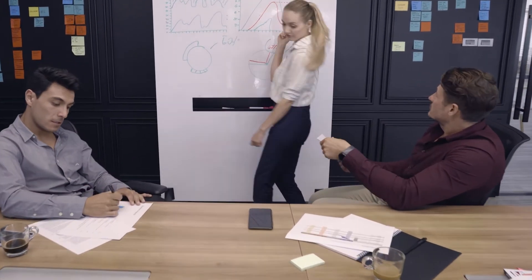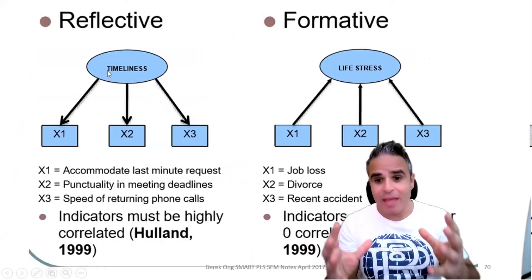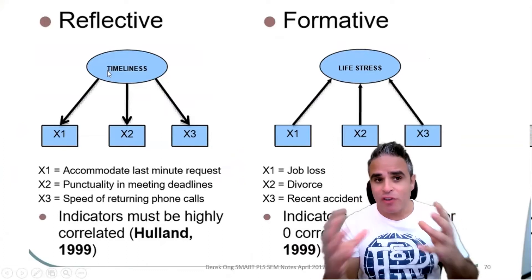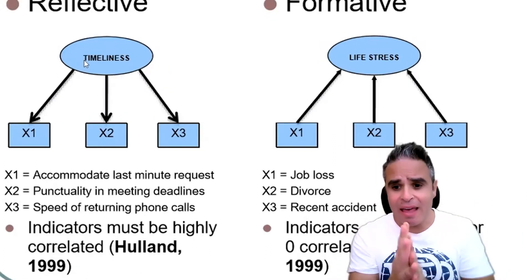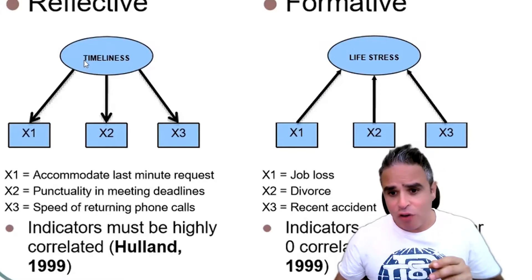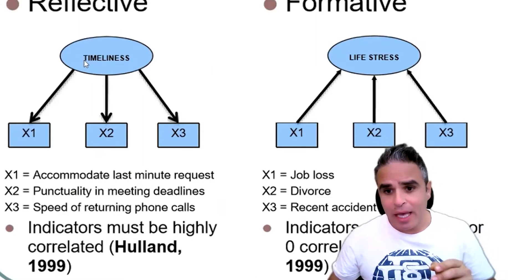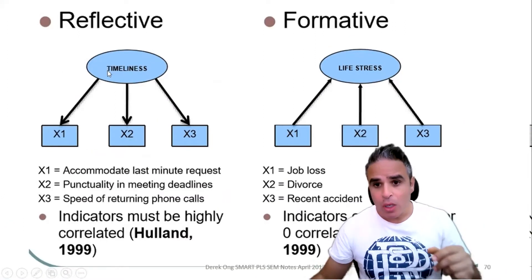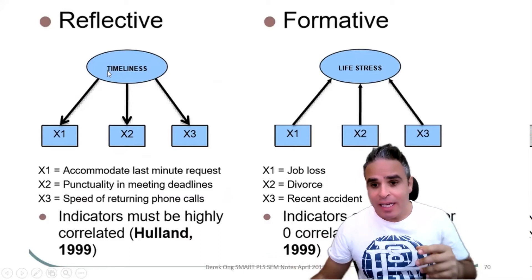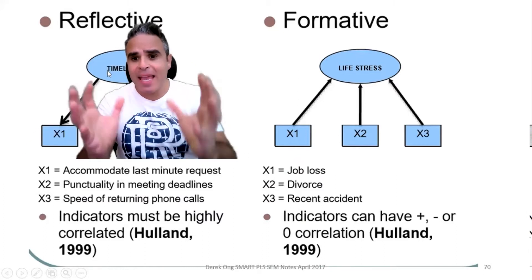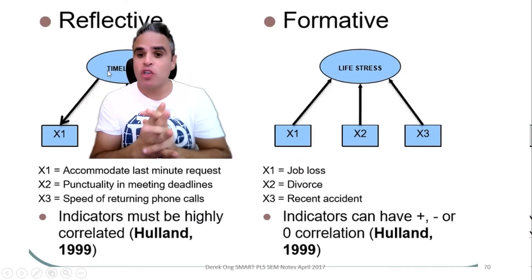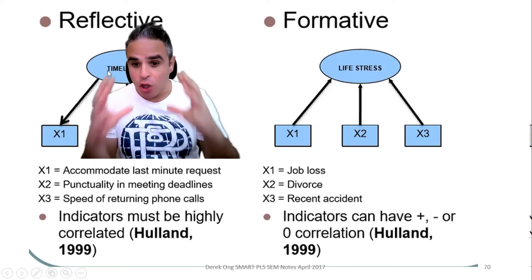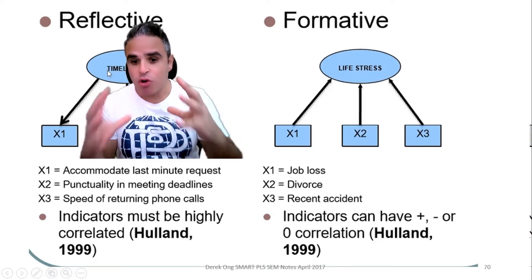I have already provided a very detailed video about formative and reflective indicators and the differences between both of them. In a formative indicator, we have for instance life stress as a construct. The indicators of life stress form and make up that construct — so job loss, divorce, and recent accident make up the formative construct of life stress.